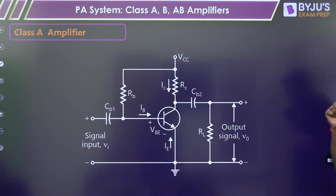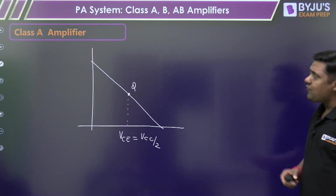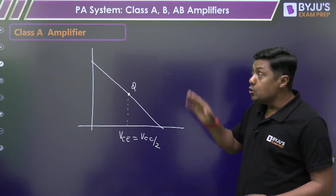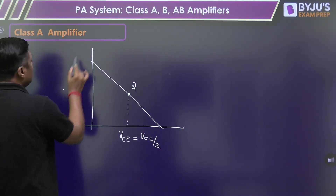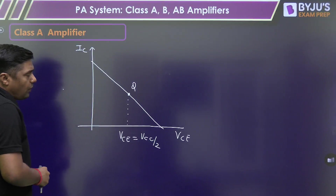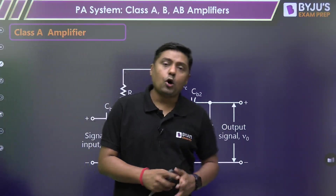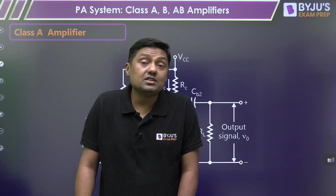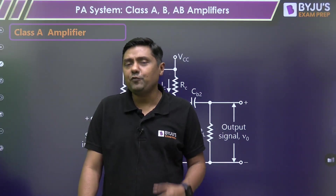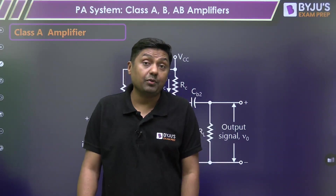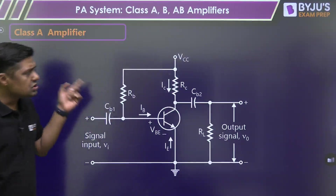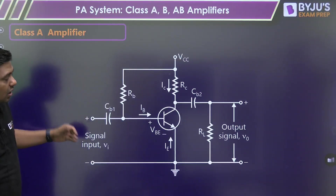Watch this diagram. This is a class A amplifier. Here, the Q point is in the middle of the active region. This is the load line for BJT, where we have IC on one axis and VCE on the other. This is not preferable for power amplification because its efficiency is very low — only 25% for direct-coupled class A and 50% for transformer-coupled class A. Those are maximum efficiencies; practical efficiency is again very low.